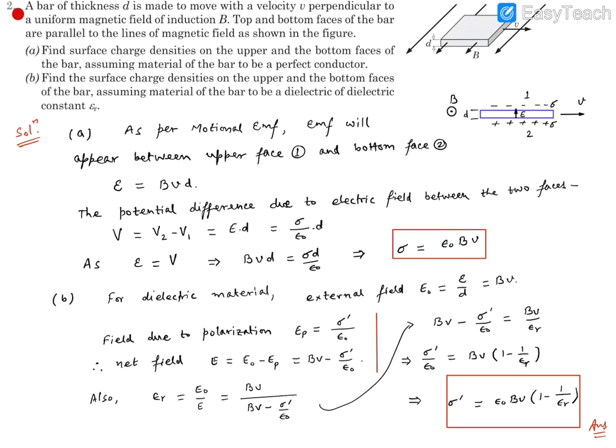Hello, here is question number two. It says a bar of thickness d is made to move with velocity v perpendicular to a uniform magnetic field of induction B.